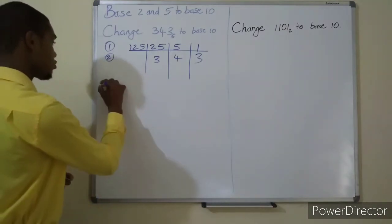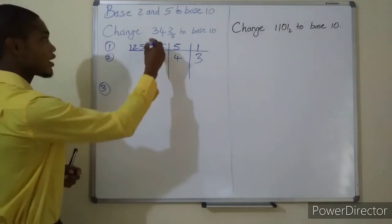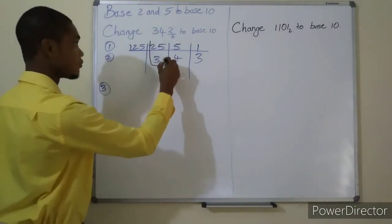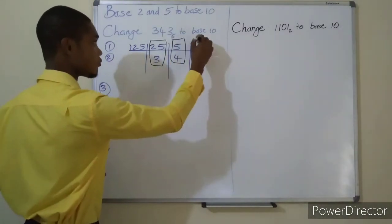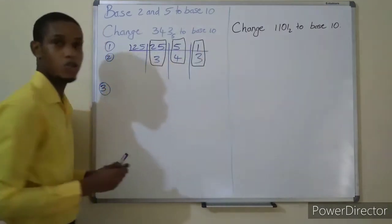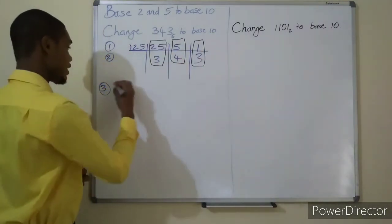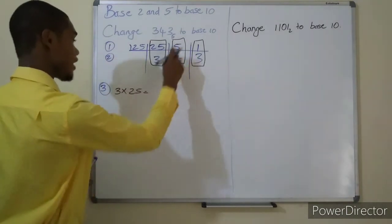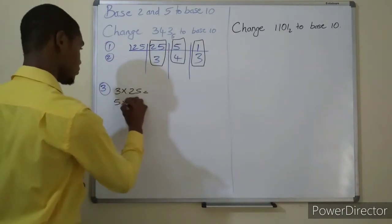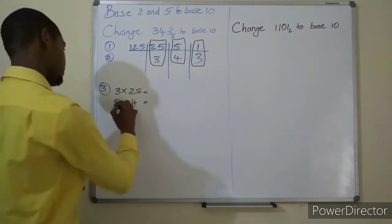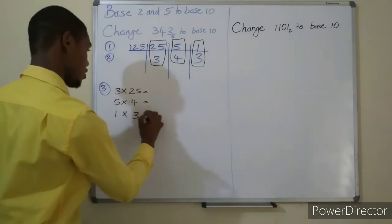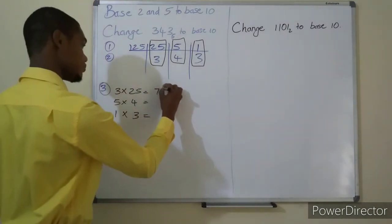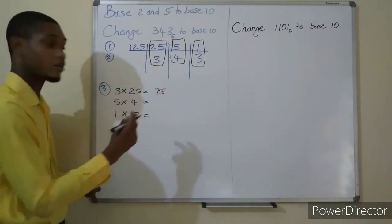Step three, now whatever digits are in the same column, those should be multiplied together. So three and twenty-five, three times twenty-five, five times four, one times three.